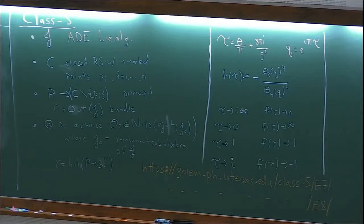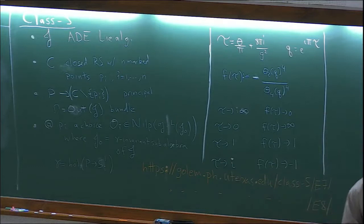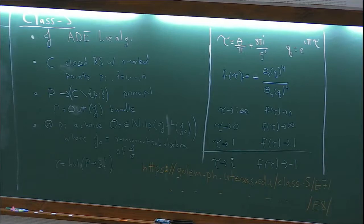You can approach tau equals zero — that's f of tau goes to one — or you could approach tau equals one, which is also f of tau goes to one. And for later purposes I'll point out that sitting smack dab in the middle of the upper half plane corresponds to taking f of tau to minus one — something which will not be a useful remark until about an hour from now.